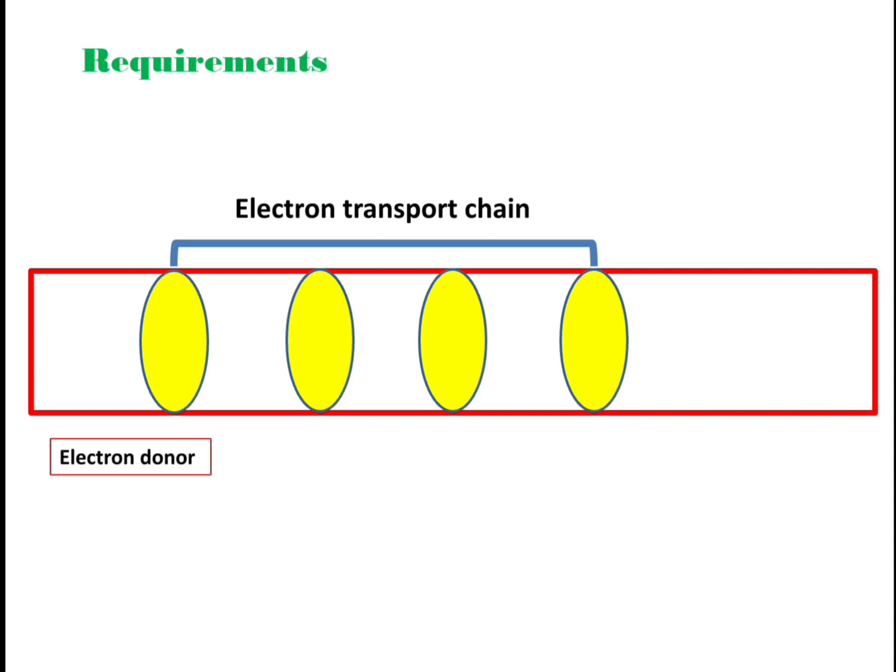Electron donors are associated with electron acceptors. For example, in mitochondria, electron donors are NADH and FADH2. And in chloroplast, the electron donor is water. The electron acceptor in mitochondria is oxygen, and in chloroplasts it is NADP positive.